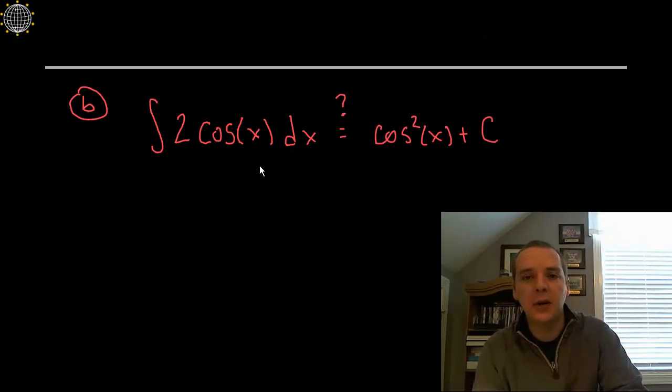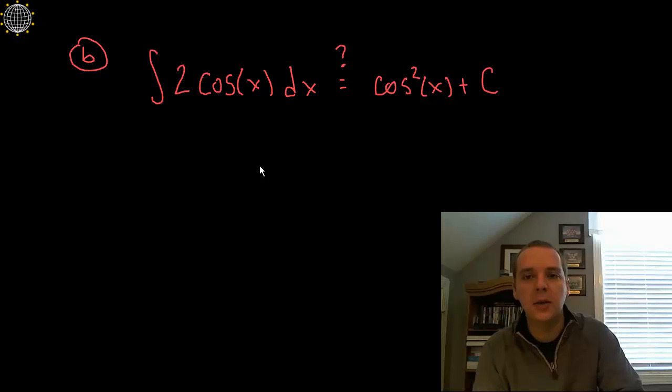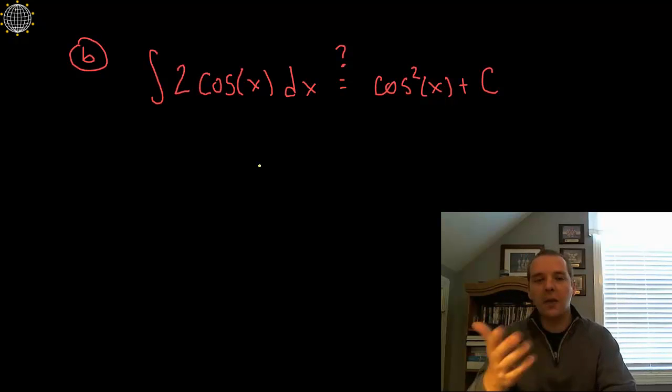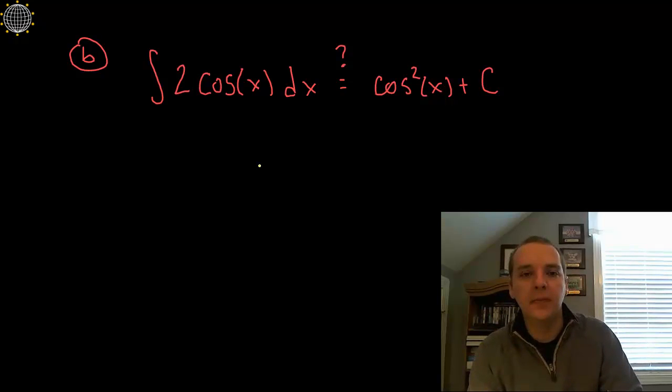So now other than just by process of elimination, something must not be quite right about this. This is a common mistake students make. They see a power in front of a trig function like this and they want to add 1 to the exponent or do something silly, thinking it's like a power rule and just not paying attention.